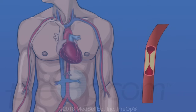Coronary arteries can become blocked by plaque, fat, and calcium deposits that build up over years. The result is coronary artery disease, also called heart disease. Severe blockages cause chest pain, heart attacks, and sometimes death.